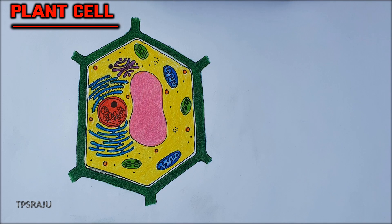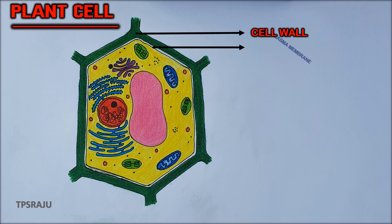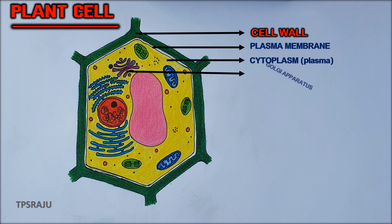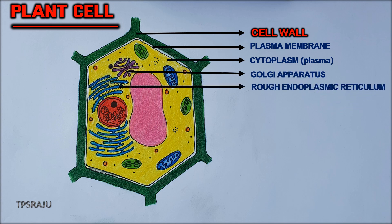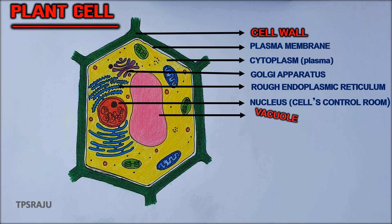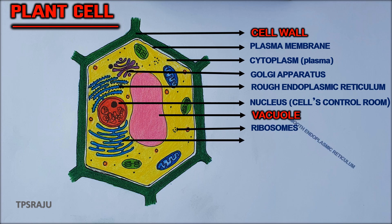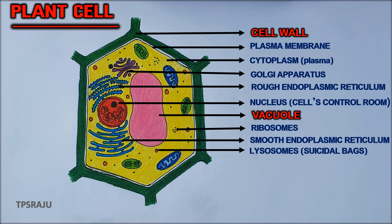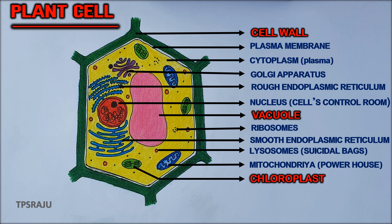Finally, let us label the parts: cell wall, plasma membrane, cytoplasm, Golgi apparatus, rough endoplasmic reticulum, nucleus, vacuole, ribosomes, smooth endoplasmic reticulum, lysosomes, mitochondria, and chloroplasts.